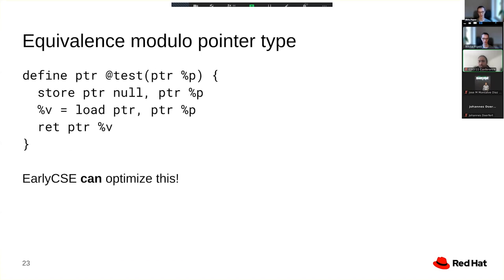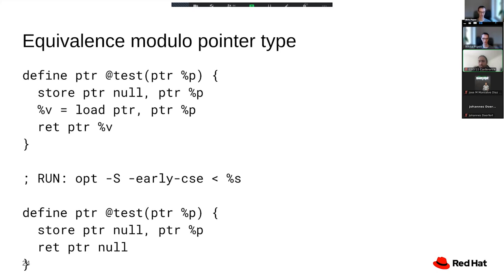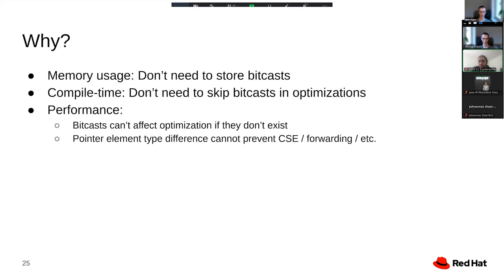With opaque pointers, that problem again goes away by design because now we no longer distinguish a pointer type. We're just storing the null pointer and then reloading from the same location. So even early CSE can optimize that without any additional logic. And that affects all other optimizations that in some way reason about value equivalence, which is quite a few optimizations, at least in minor ways.